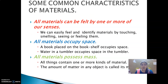There are some common characteristics of materials. All materials can be felt by one or more of our senses. That means we can easily feel and identify materials by touching, smelling, seeing or feeling them. For example, we cannot see air but we can feel it on our skin. We can smell a perfume even from a distance. Cotton is soft to touch whereas stone is hard. So from this we can easily identify materials by touching, smelling, seeing or feeling them.